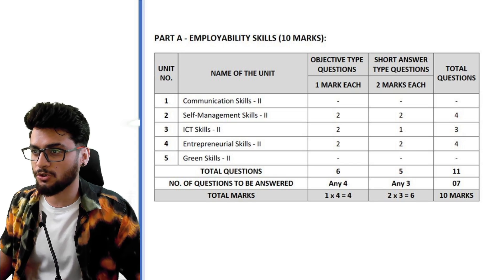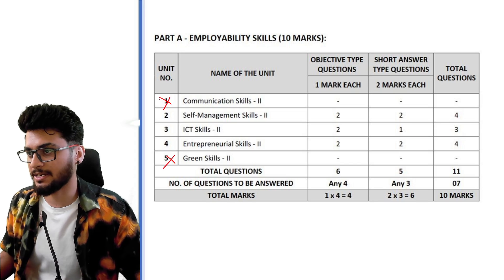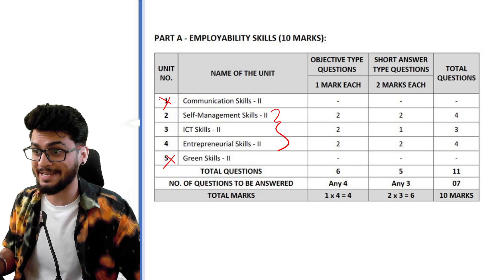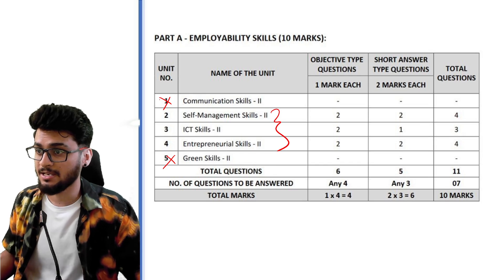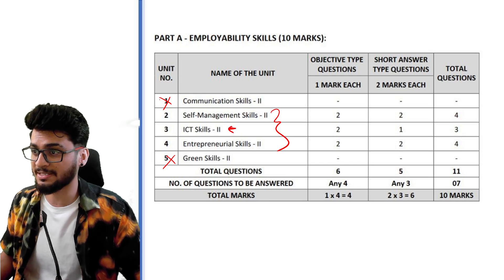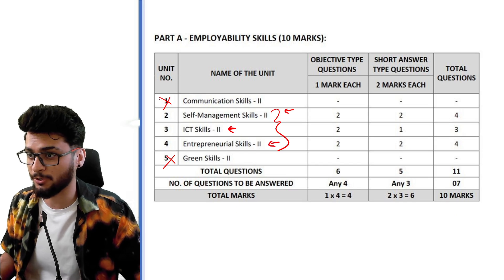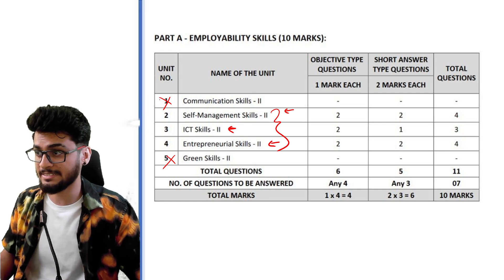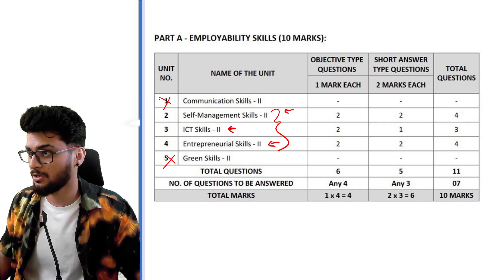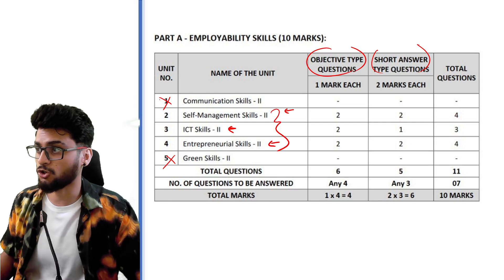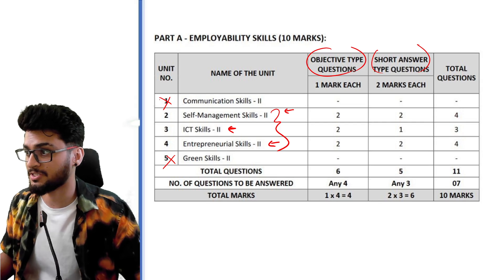To quickly recall: in communication skills you don't have green skills. You only have three chapters — self-management skills, ICT skills, and entrepreneurial skills. The easiest of these is ICT skills, then self-management skills, and then finally entrepreneurial skills. You can get two types of questions from these three chapters: objective type, or short answer type which is of two marks.